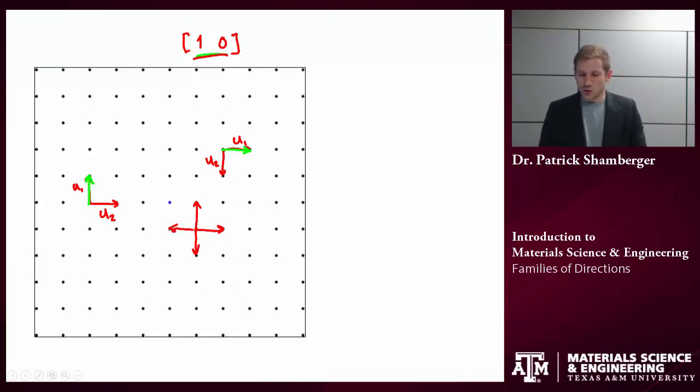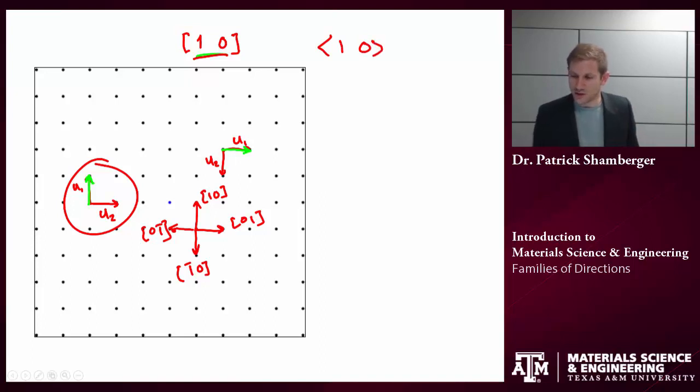If I were to notate these families given this coordinate system, this would be 1, 0, 0, 1, bar 1, 0, 0, bar 1. And I would say the family of directions is 1, 0. So when we write families of directions, we use these angular brackets.